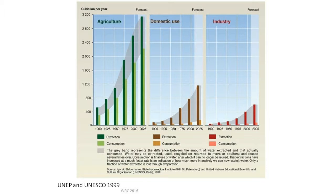These are the trends from 1999. They come from the UN system, primarily from UNESCO. And it's striking that agriculture shows the biggest increases in water use around the world. This is on the back of many developmental strategies, including our own, on expansion of agriculture as a path to economic development and employment.